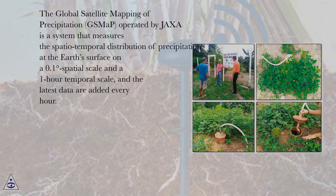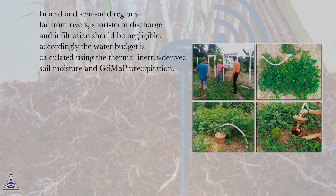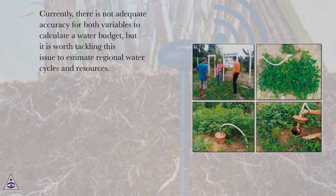The Global Satellite Mapping of Precipitation, GSMaP, operated by JAXA is a system that measures the spatiotemporal distribution of precipitation at the Earth's surface on a 0.1-degree spatial scale and a 1-hour temporal scale, and the latest data are added every hour. In arid and semi-arid regions far from rivers, short-term discharge and infiltration should be negligible; accordingly, the water budget is calculated using the thermal inertia-derived soil moisture and GSMaP precipitation. Currently, there is not adequate accuracy for both variables to calculate a water budget, but it is worth tackling this issue to estimate regional water cycles and resources.